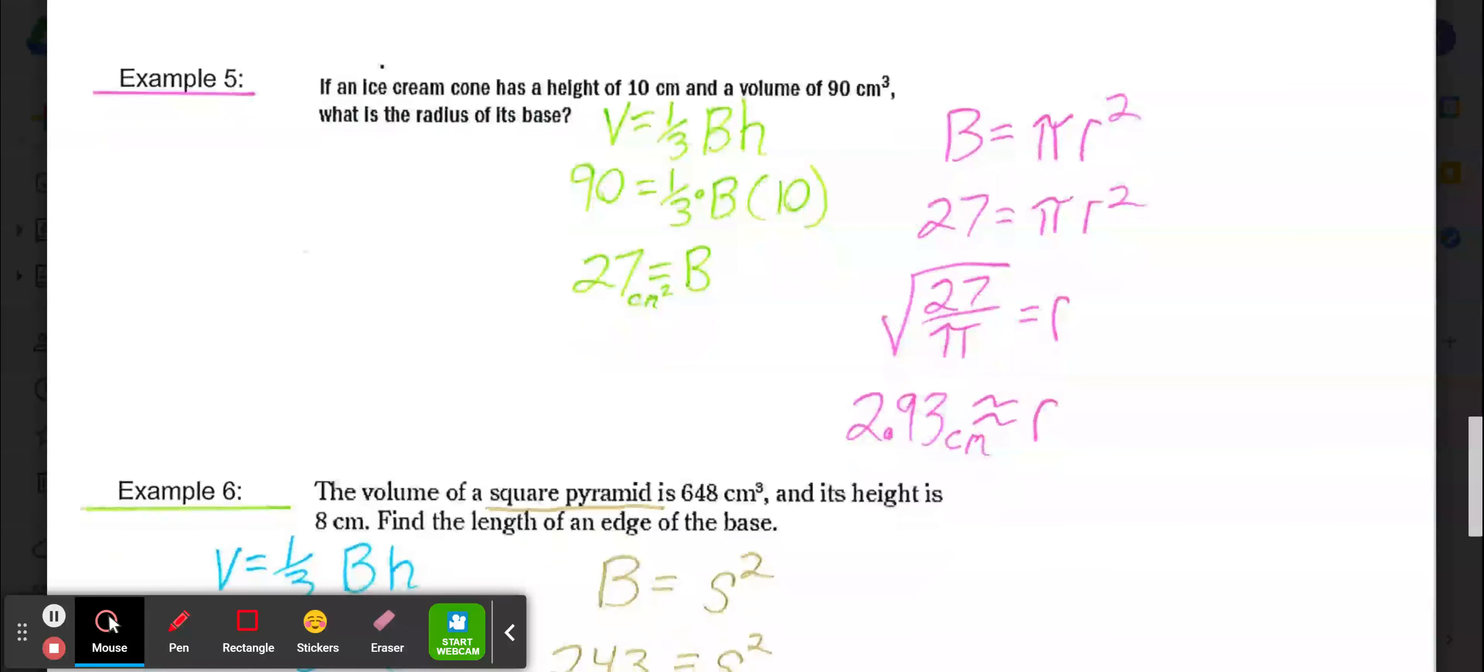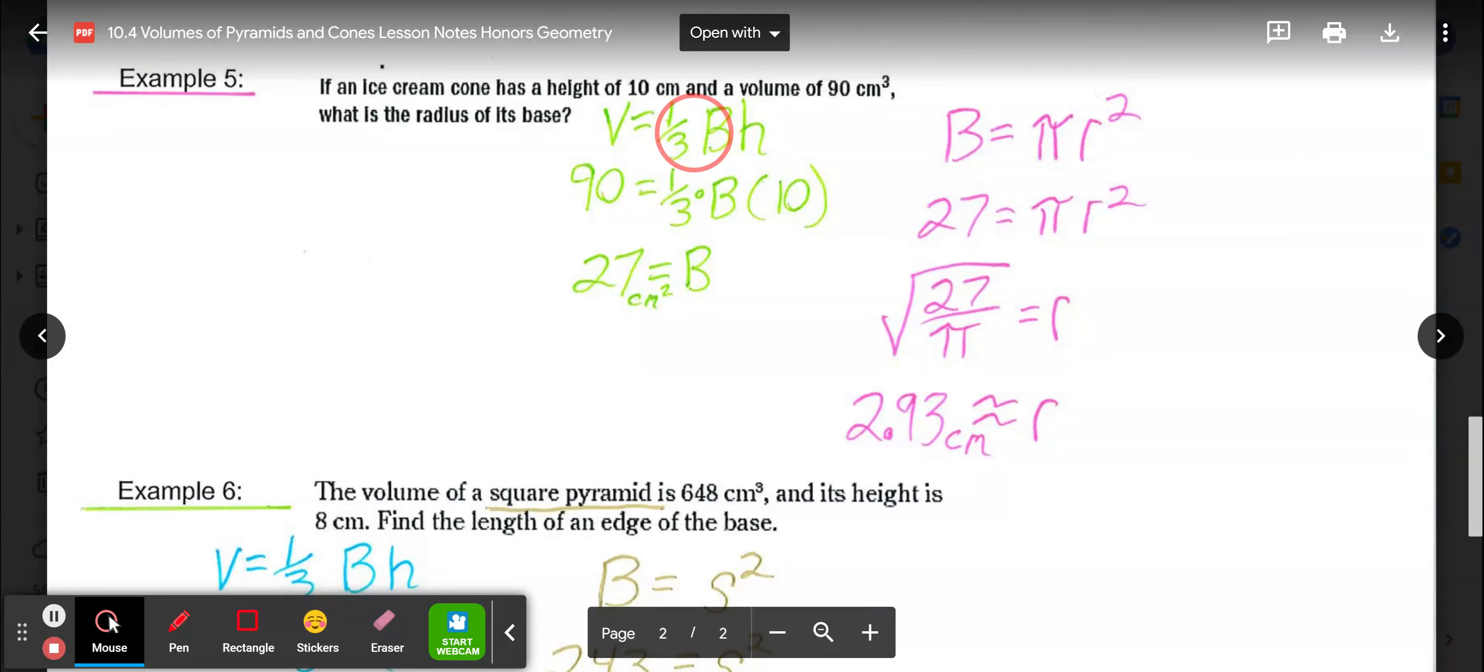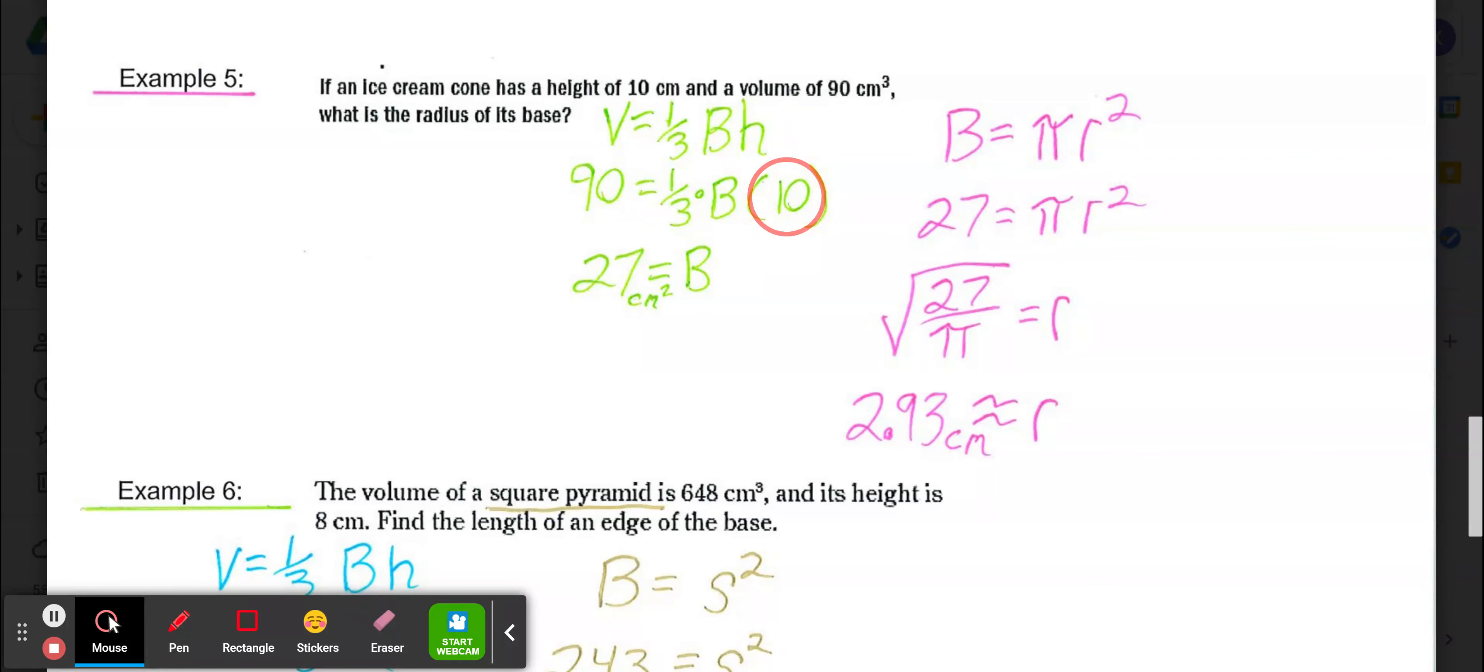Then we get to example 5 here where they tell us that we are dealing with an ice cream cone that has a height of 10 centimeters and a volume of 90 cubic centimeters. Using that information, we need to find the radius of the base. We know volume is one-third area of the base times the height. If I knew my volume was 90 and the height was 10, then I can put that information into our volume formula to solve for B. So 90 divide it by the one-third which is 270, then divide it by 10 to get B alone, giving us 27 square centimeters as the area of that base.